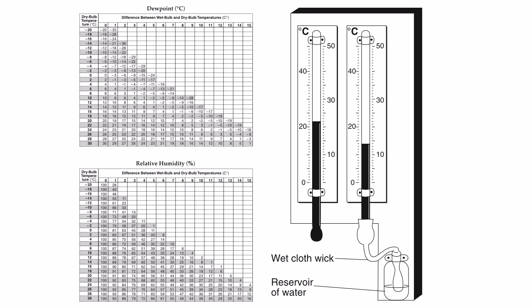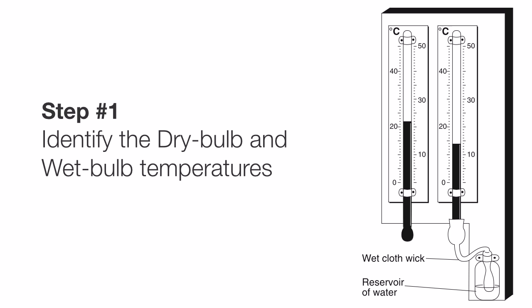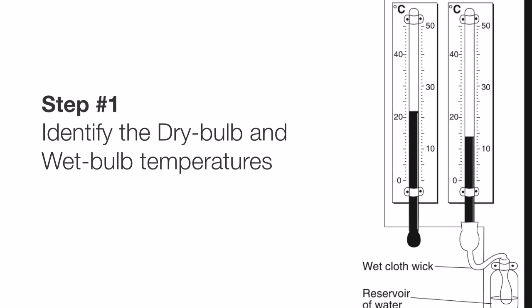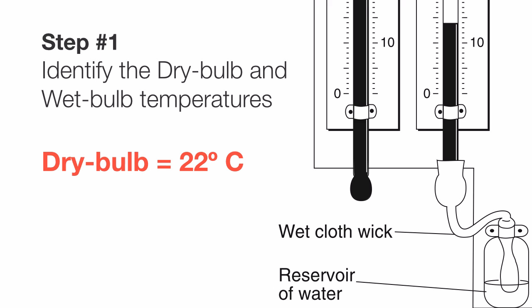So let's see how we use these tables. We'll begin by taking some measurements. Step one is going to be to identify the dry bulb and wet bulb temperatures according to your psychrometer. Let's use this one as an example. If you look right here, you'll see this is the dry bulb and the temperature appears to be 22 degrees Celsius. If we look over here at the wet bulb, we see the temperature appears to be about 14 degrees Celsius.